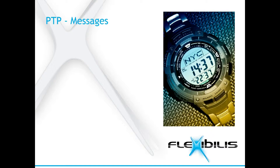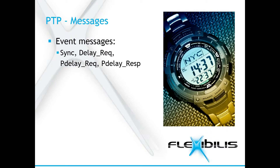Let's start with the different message types of PTP. There are two types of them: event messages and general messages. The event message types are sync, delay request, peer delay request, and peer delay response. They are all timestamped and they should be prioritized over other packets in the network to guarantee fastest possible delivery.